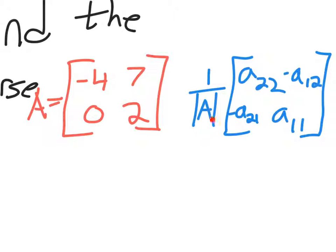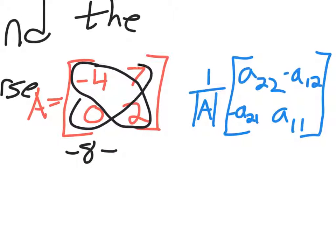The vertical bars around the A mean it's the determinant of A. So if you need help with that, the determinant is always found by taking the top left number and cross-multiplying it to give you negative 8. And then you subtract that by what happens when you cross-multiply these guys. 0 times 7 gives you 0. So our determinant is negative 8.